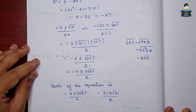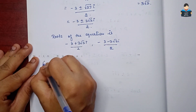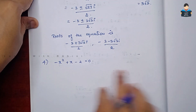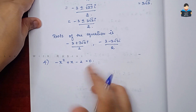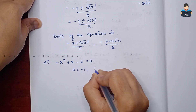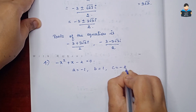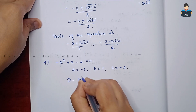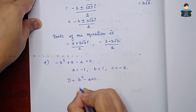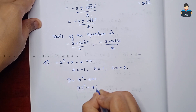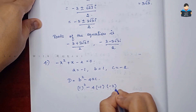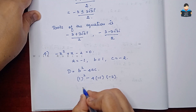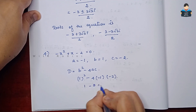Next is the fourth sum: -x² + x - 2 = 0. Here a = -1, b = 1, and c = -2. The discriminant D = b² - 4ac = 1² - 4×(-1)×(-2) = 1 - 8 = -7.